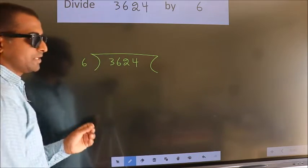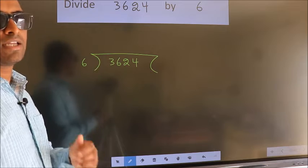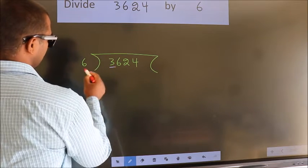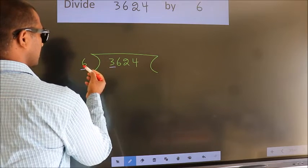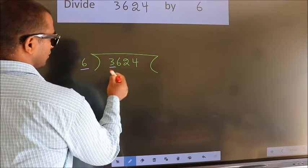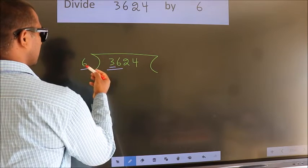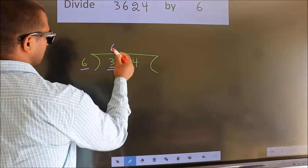This is step 1. Next, here we have 3, here 6. 3 is smaller than 6, so we should take 2 numbers: 36. When do we get 36 in the 6 table? 6 times 6 is 36.